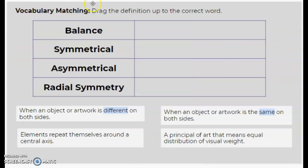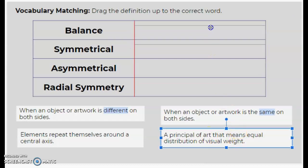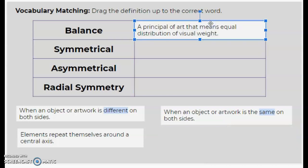All right, so then we did some vocabulary matching and I'd like to show you what the correct answers were. Many of you got these right, but if you didn't, now you can see the right answers. Balance is a principle of art that means equal distribution of visual weight, so I'll drag that one up there.